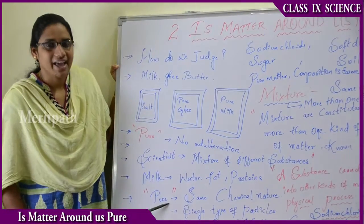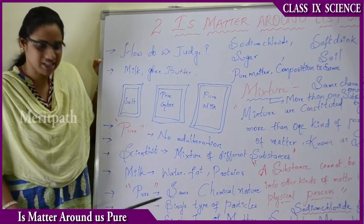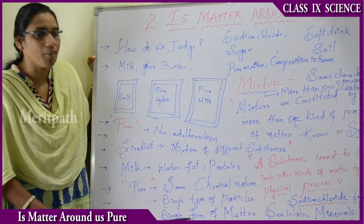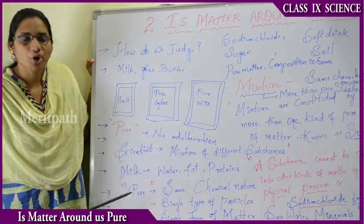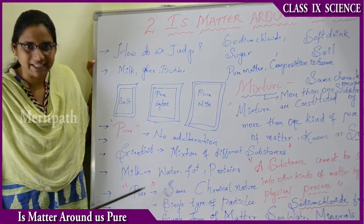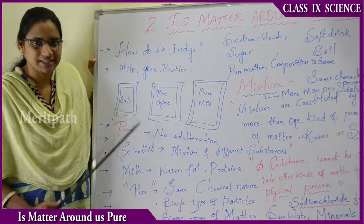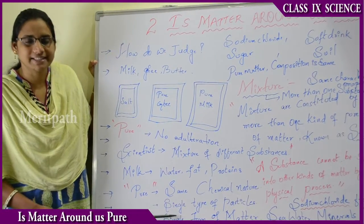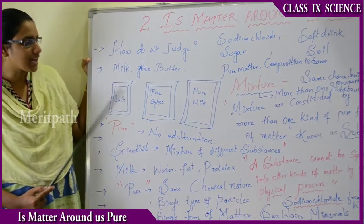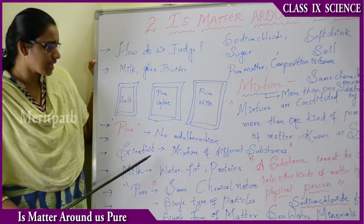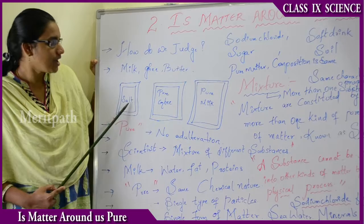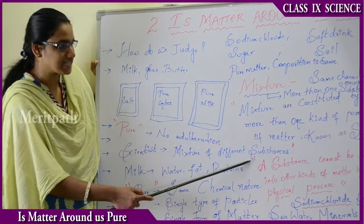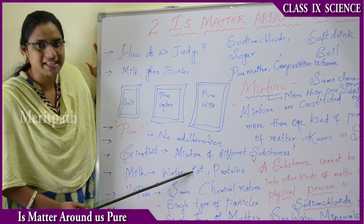According to scientists, pure matter has the same chemical nature, a single type of particle, and a single form of matter. A mixture, on the other hand, is a composition of different substances combined together.